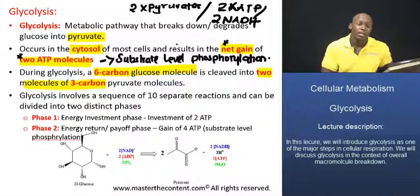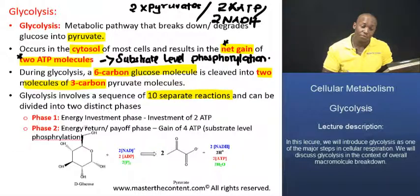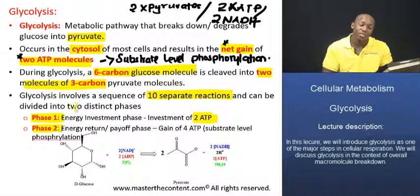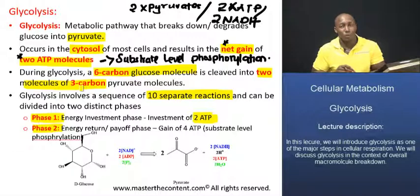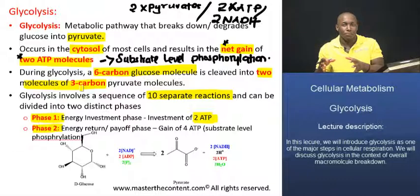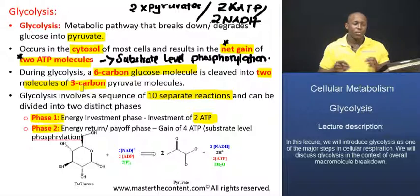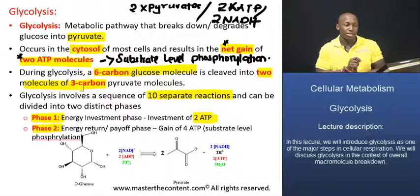Glycolysis involves a sequence of about 10 separate reactions, which we can divide into two distinct phases. The first phase is the energy investment phase — the reactions that require the input of ATP. In this phase, we use two molecules of ATP per molecule of glucose. In the second phase, the energy return or payoff phase, we gain an additional four ATP molecules. That's why we have a net gain of two ATP: the process uses two but gives back four. The entire process is strictly under enzymatic control, making it easy to manipulate by controlling the activity of each enzyme.